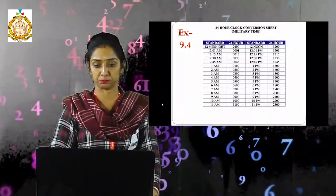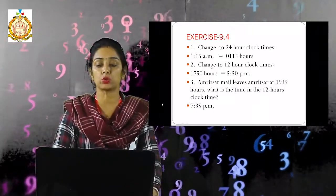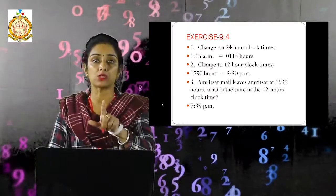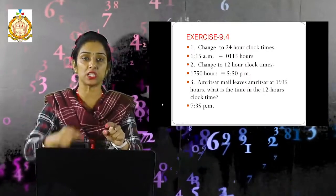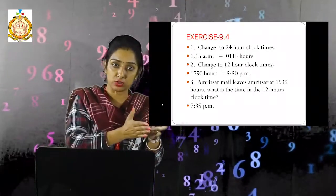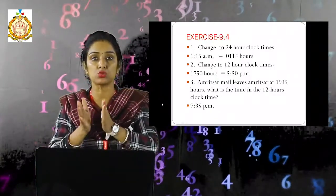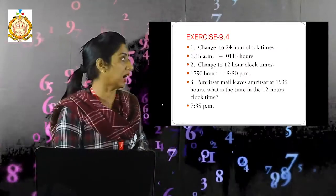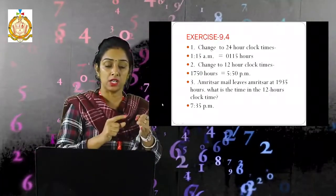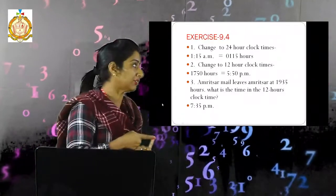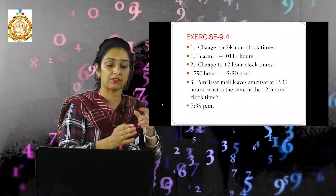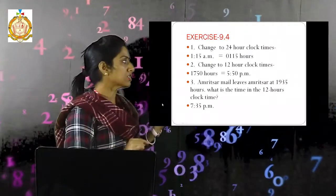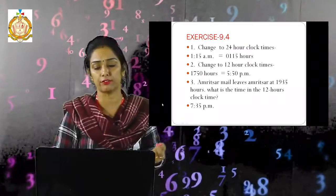Now see exercise 9.4 — change to twenty-four hour clock time. First: 1:15 AM. Since it is after midnight, it stays as 01:15. There is no AM or PM in a twenty-four hour clock. Second: change 17:50 to twelve-hour clock. Subtract 12:00 from 17:50 and you get 5:50 PM.